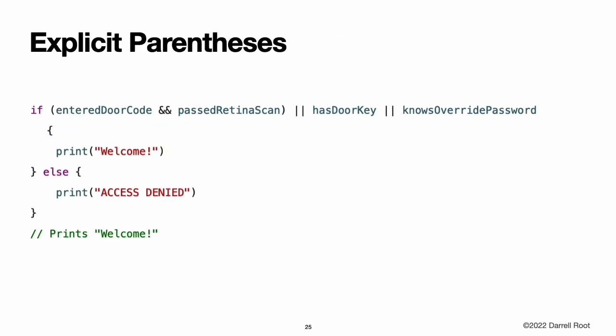Explicit parentheses. It is sometimes useful to include parentheses when they are not strictly needed, to make the intention of a complex expression easier to read. In the door access example, it is useful to add parentheses around the first part of the compound expression to make its intent explicit. The parentheses make it clear that the first two values are considered as part of a separate possible state in the overall logic. The output of the compound expression does not change, but the overall intention is clearer to the reader. Readability is always preferred over brevity. Use parentheses where they help to make your intentions clear.